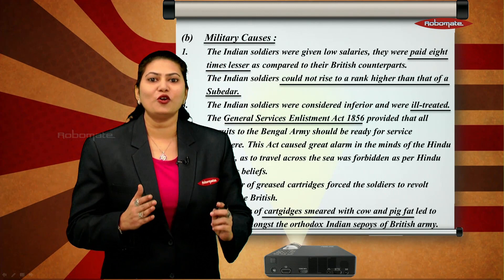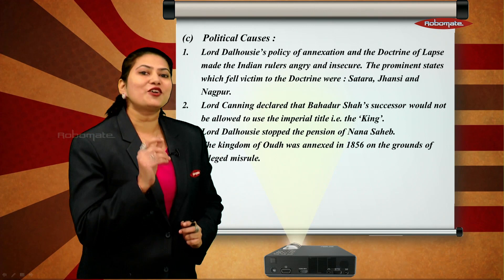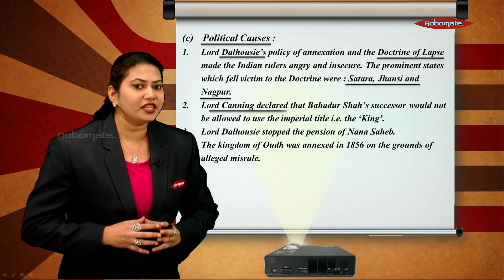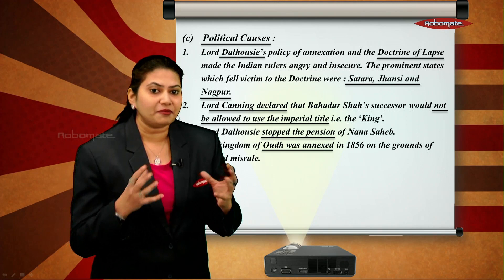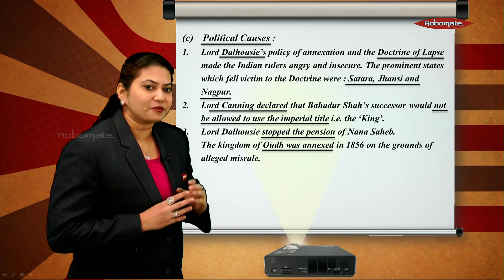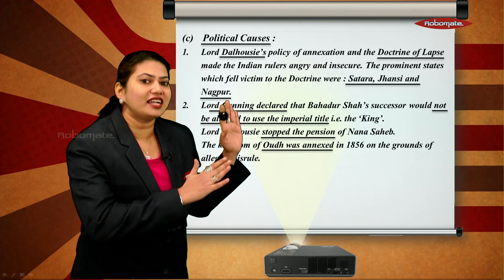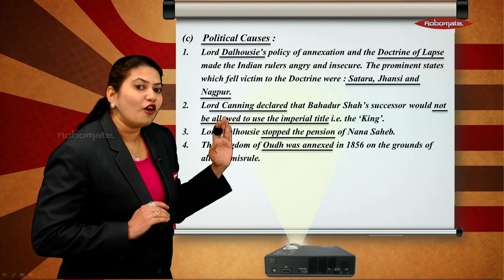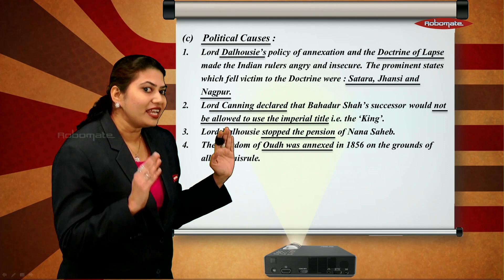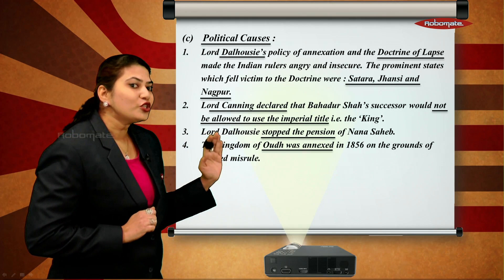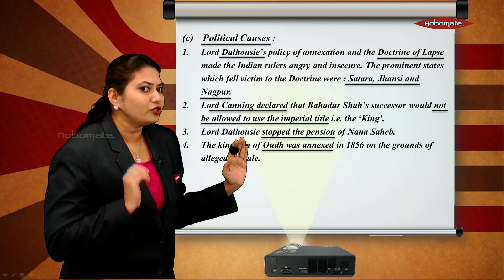For the political causes of the revolt of 1857, keywords highlighted include: Lord Dalhousie, who implemented the Doctrine of Lapse; the names of princely states annexed under this doctrine; Lord Canning's role in not allowing imperial titles to the successors of Bahadur Shah Zafar; the pension denied to Nana Sahib; and the annexation of Ayodhya in 1856.